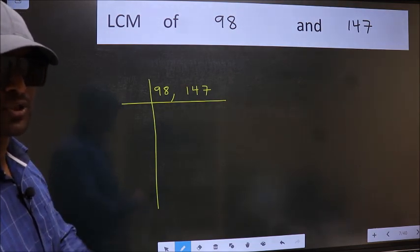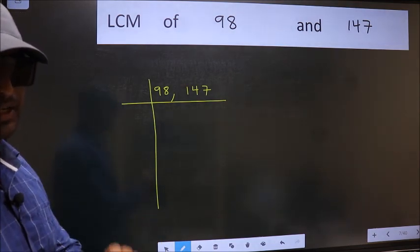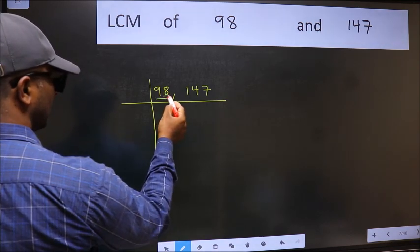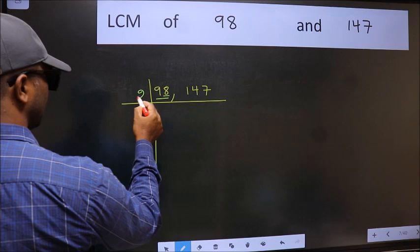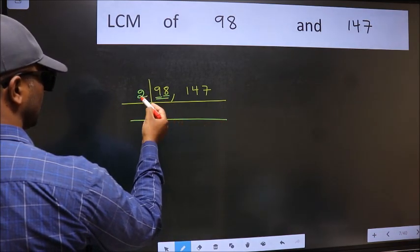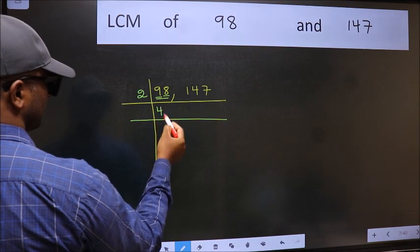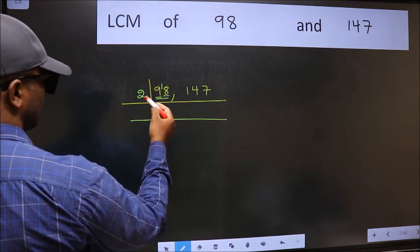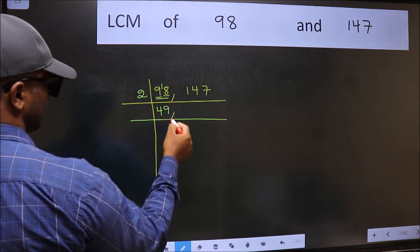Now you should focus on the first number which is 98. In this number, last digit is 8, even, so take 2. First number 9, a number close to 9 in the 2 table is 2 times 8. 9 minus 8 is 1, 1 carried forward 18. When do we get 18 in the 2 table? 2 nines, 18.